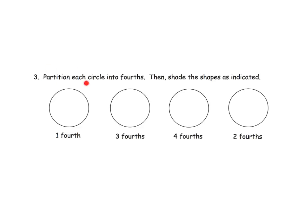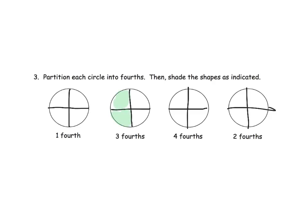For this one, it says partition each circle into fourths, then shade the shapes as indicated. We want our second graders to recognize fourths with a circle — it's pretty straightforward. We're just going to go down and across, down and across, down and across, down and across. Once we've got this, it's easy to shade in one fourth, three fourths, or four fourths. We want students to recognize that four fourths is the whole thing. And they get choices — if we're talking about three fourths, I can shade in these three, but a student might choose a different three. Parents and teachers, let your students explore the variety of ways to solve these problems.